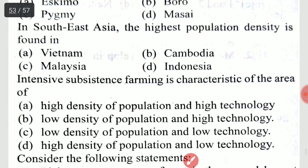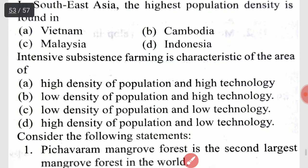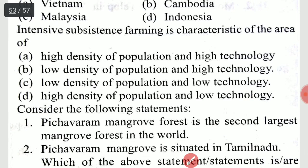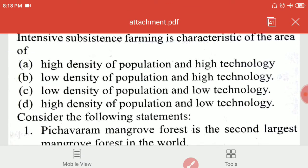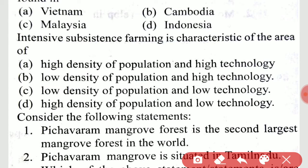In Southeast Asia, the highest population density is found in Vietnam. Intensive subsistence farming is characteristic of areas with high density of population and low technology.